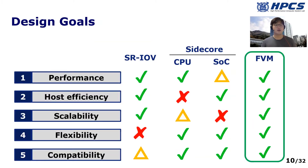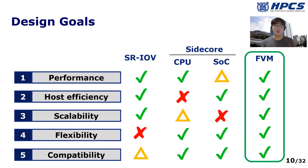So we set the following design goals to resolve the challenges in modern storage virtualization. First, a next-generation virtualization mechanism should offer near-native performance of NVMe storage devices. Second, it should minimize the amount of host resource usage so that a host machine can provide more computing power to virtual machines. Third, it should scale with the number of back-end storage devices. Also, it should not rely on hardwired and vendor-specific units to implement flexible and compatible VM management.